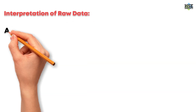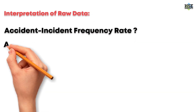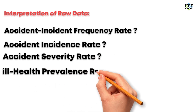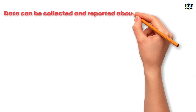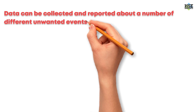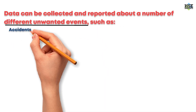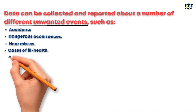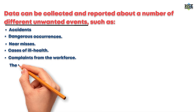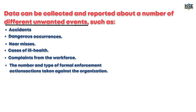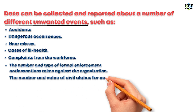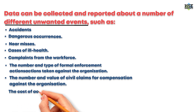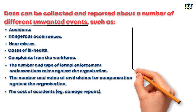Interpretation of raw data includes accident incident frequency rate, accident incidence rate, accident severity rate, and ill health prevalence rate. Data can be collected and reported about a number of different unwanted events such as accidents, dangerous occurrences, near misses, cases of ill health, complaints from the workforce, the number and type of formal enforcement actions taken against the organization, and the number and value of civil claims for compensation, as well as the cost of accidents such as damage repairs.